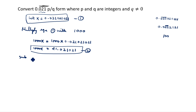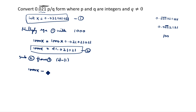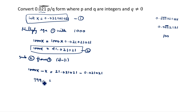Now subtract equation one from equation two. So we do equation 2 minus equation 1. Equation 2 is 1000x and equation 1 is x, so 1000x minus x gives us 999x.